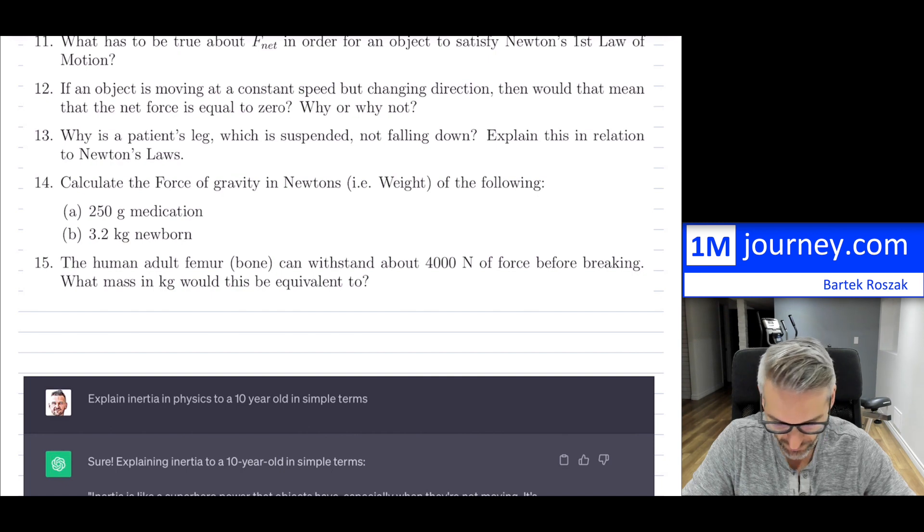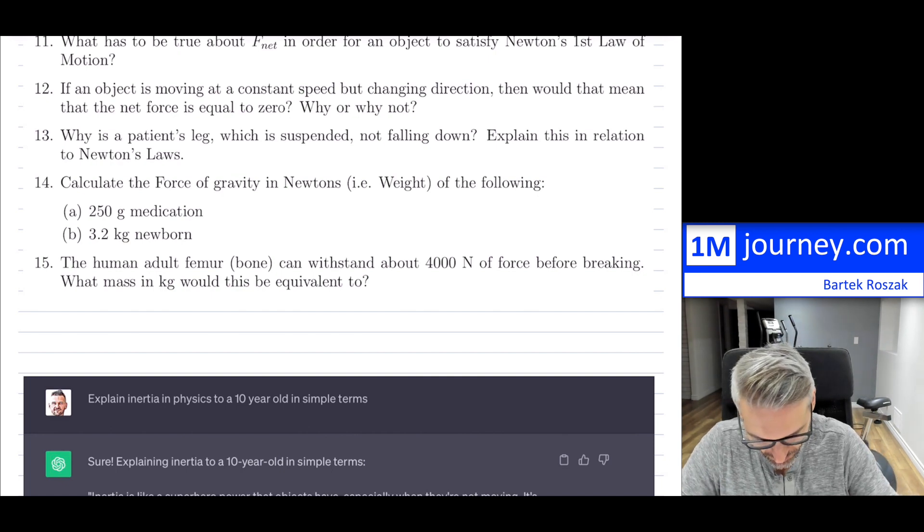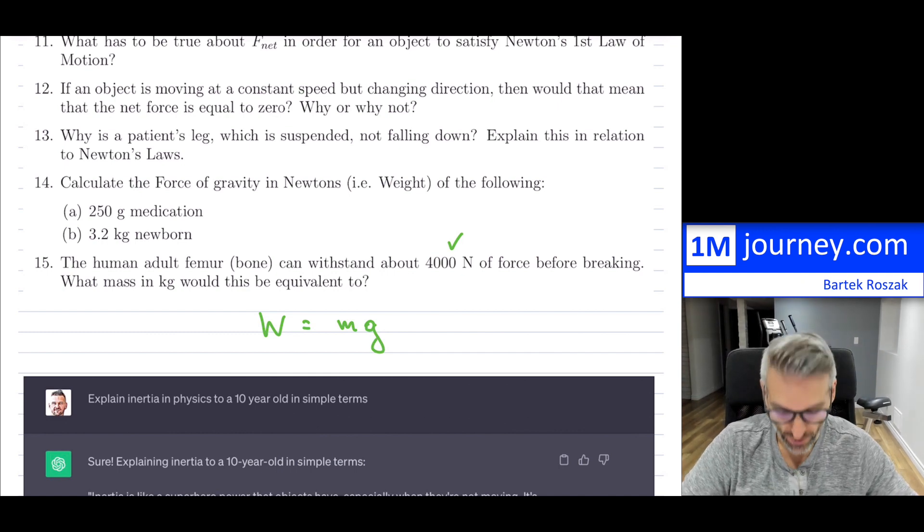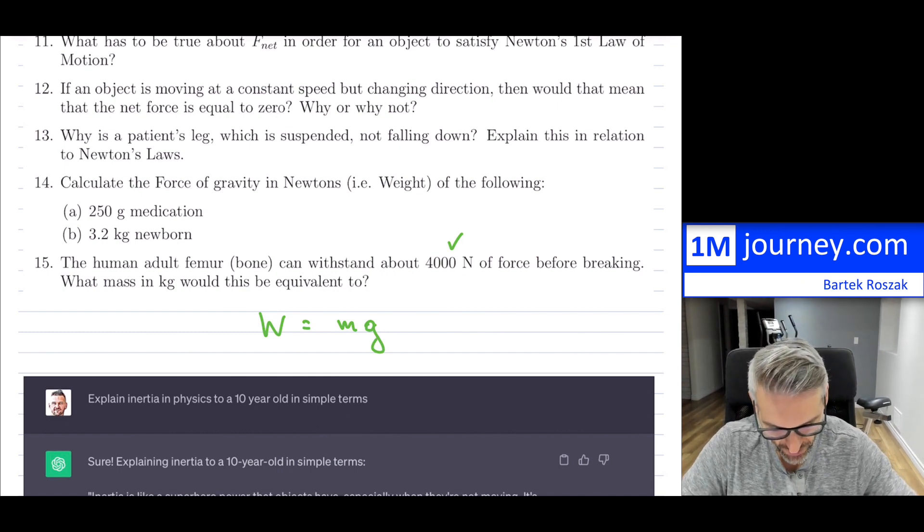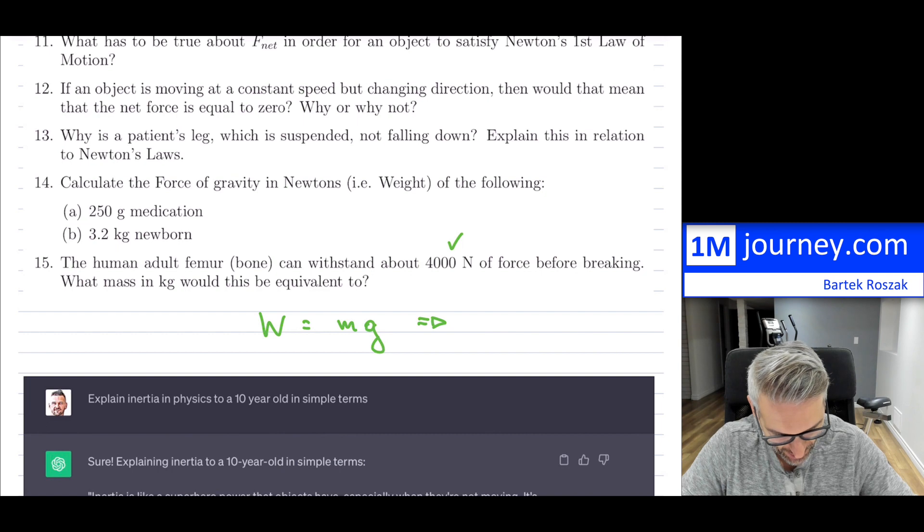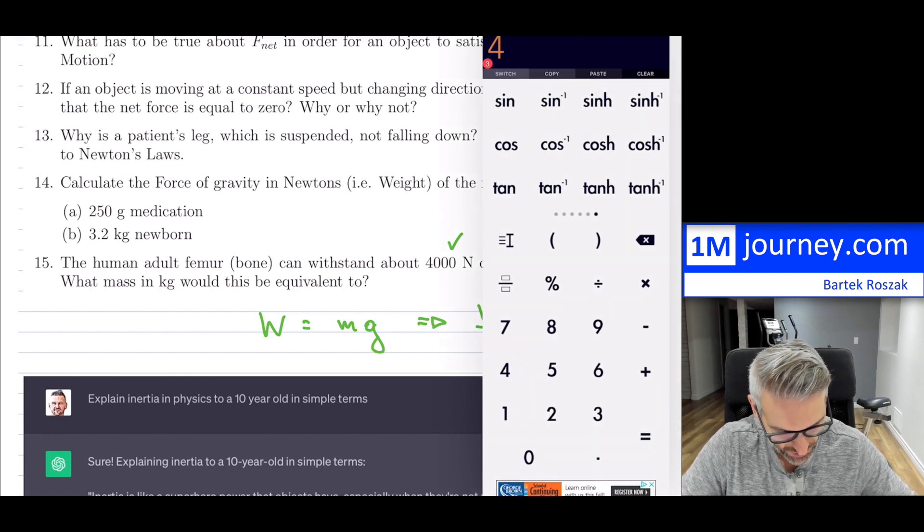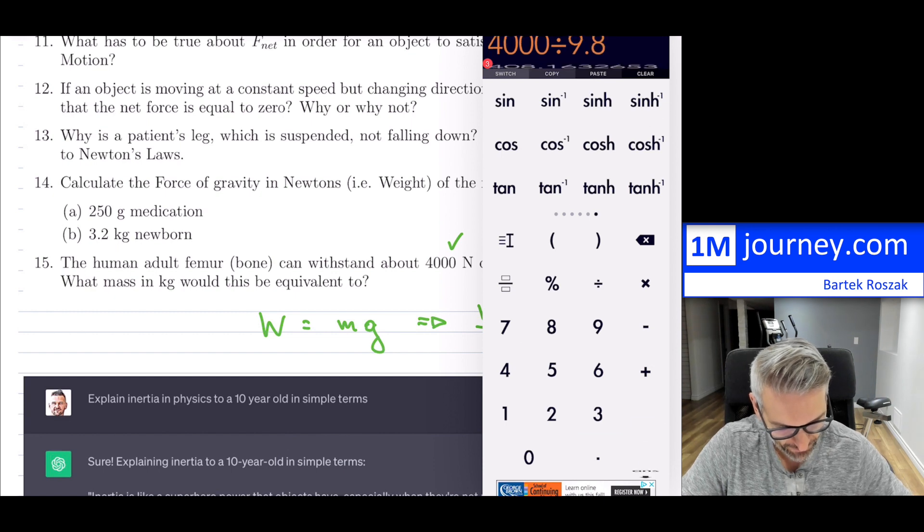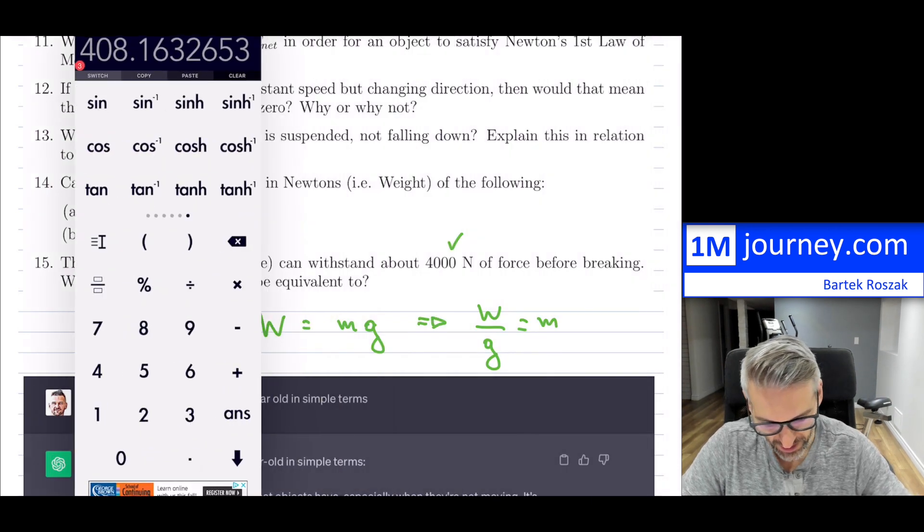Then the last one: the human adult femur bone can withstand about 4,000 Newtons of force before breaking. What mass in kilograms would this be equivalent to? If you're equating and you're assuming that this would be the weight, that means you have the weight equation. So weight equals mass times gravity. What this is saying is that if we know the weight, we divide it by gravity and we're going to get mass. So in this case, 4,000 divided by 9.8, and that's approximately 408 kilograms.